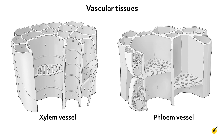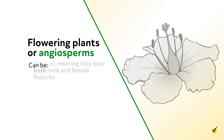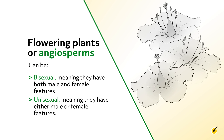Non-vascular plants, like moss, don't have roots and instead absorb water through osmosis. We can also classify plants based on their means of reproduction. Specifically, flowering plants or angiosperms can be bisexual, meaning they have both male and female features, or unisexual, meaning they have either male or female features.